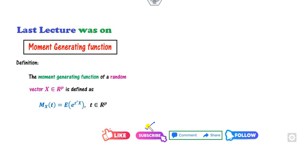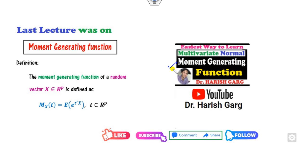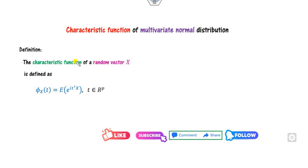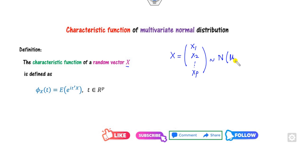You can follow my YouTube channel to get a notification when I upload my next video. In our last lecture we defined the moment generating function and described its various properties. Now in this lecture we will define the characteristic function. X is my multivariate normal distribution, that means X is (X1, X2, ..., XP), where each follows the normal distribution with mean vector mu and covariance matrix Sigma. We can define the characteristic function denoted by Phi.